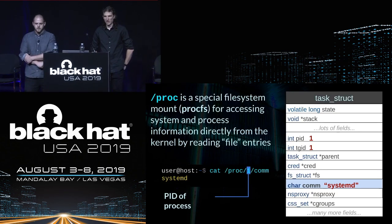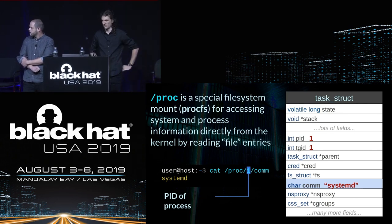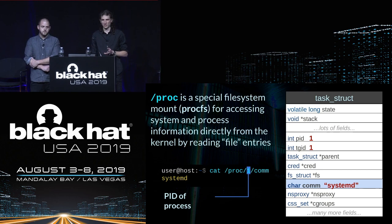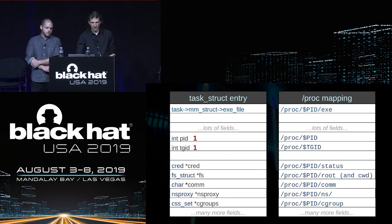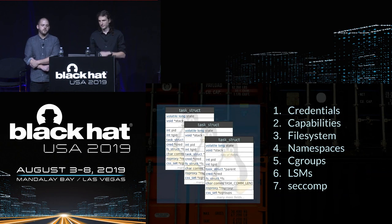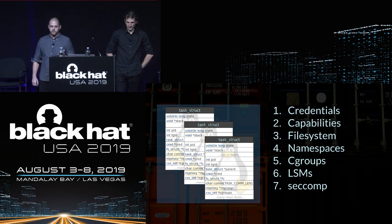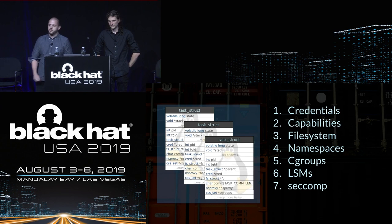The proc filesystem allows access to information from the kernel. The kernel uses task structs to define tasks, and you can refer to many task attributes by reading its pid entry in the proc filesystem. The task struct holds most of the isolation mechanisms that make a container contained. The properties that make a container a container are: credentials, capabilities, where the file system root is located, namespaces, cgroups, Linux security modules, and sometimes seccomp. It's largely the job of the container engine to apply these different properties.